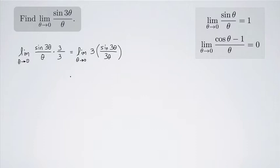Now according to limit rules that constant 3 can be pulled outside. So I have 3 times the limit as theta approaches 0 of the sine of 3 theta divided by 3 theta.